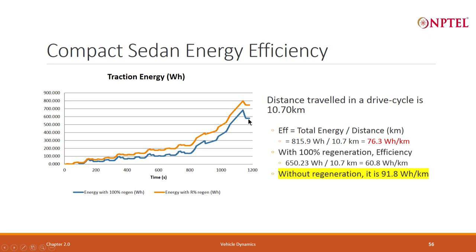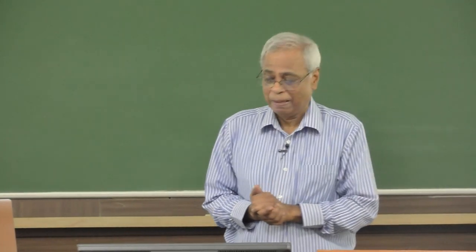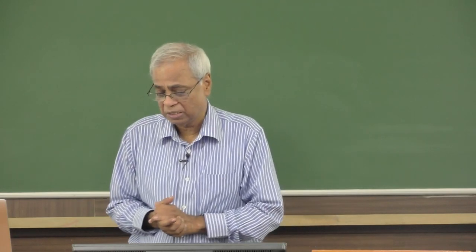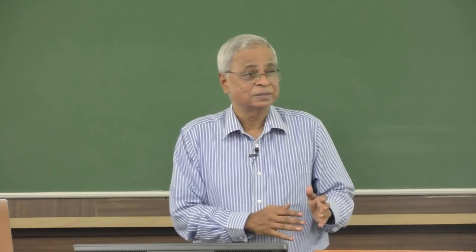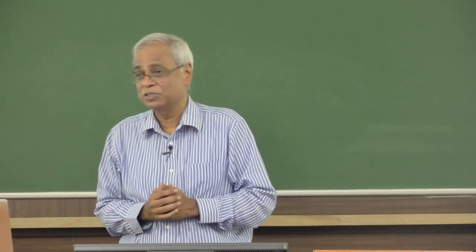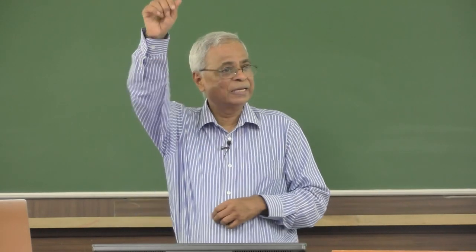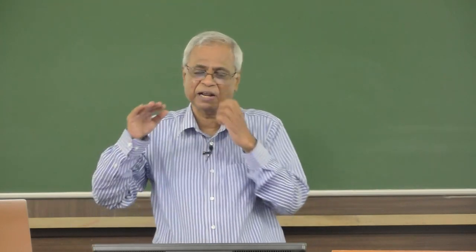Without regeneration it consumes about 91 watt-hours per kilometer. So you can see: 90, 76, 60 watt-hours per kilometer. If I can get regeneration, I need a much smaller battery. Between regeneration and without regeneration, watt-hours per kilometer is 50% higher without regeneration compared to 100% regeneration. Why? Because you are going up and down in speed — increasing speed then decelerating. That is what city driving does: a lot of acceleration and deceleration, not constant speed.